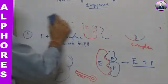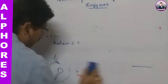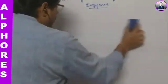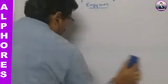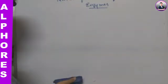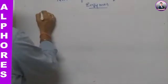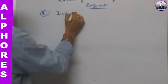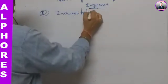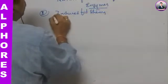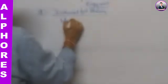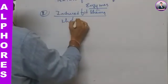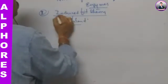The second theory is called the Induced Fit Theory, proposed by Koshland. It is similar to the lock and key model but has differences. The induced fit theory was proposed by Koshland.